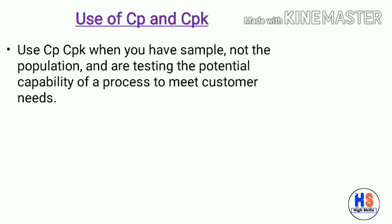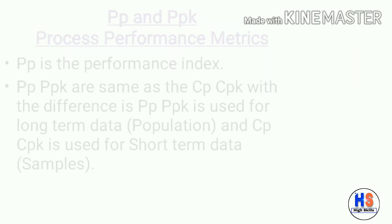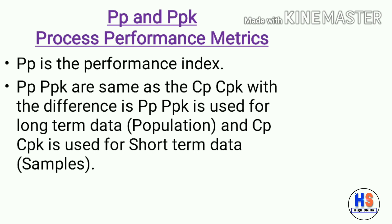Use CP and CPK when you have sample data from the population and are testing the potential capability of a process to meet customer needs. Next, let's discuss PP and PPK — the process performance metrics.